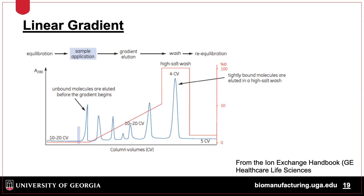For a linear gradient, buffer B is changed gradually over time, usually 10 to 20 column volumes, and the gradient does not have to end at 100% B but can go to other concentrations of elution buffer. Usually a high salt wash of 100% B is run at the end of the chromatography prior to re-equilibration of the column.